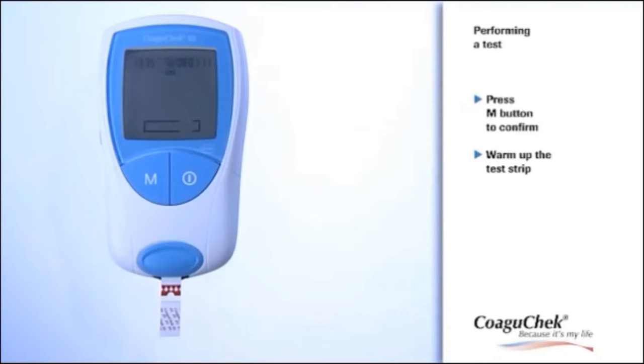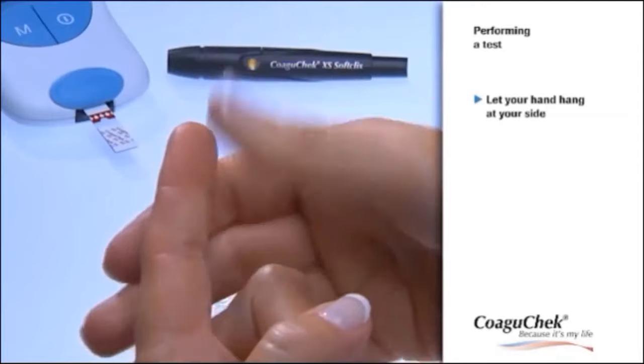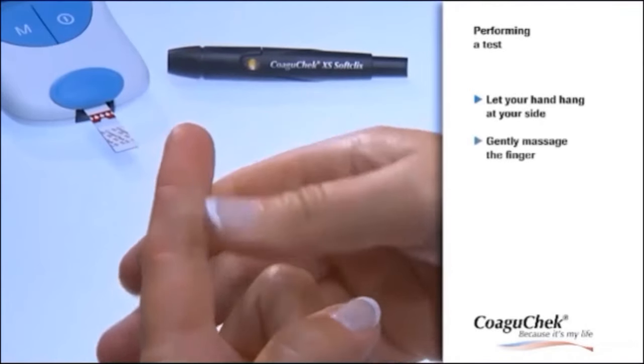The code number stops flashing and the test strip is warming up. This is the perfect time to start getting your blood sample. Before you start lancing, let your hand dangle for a moment and then gently massage the finger.